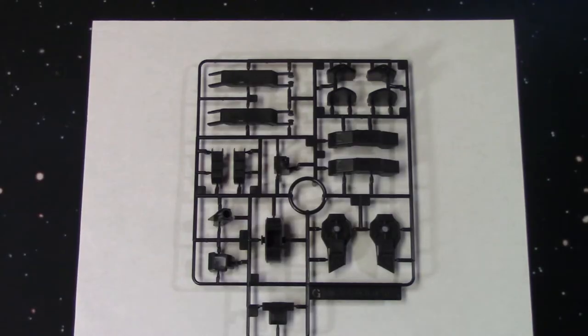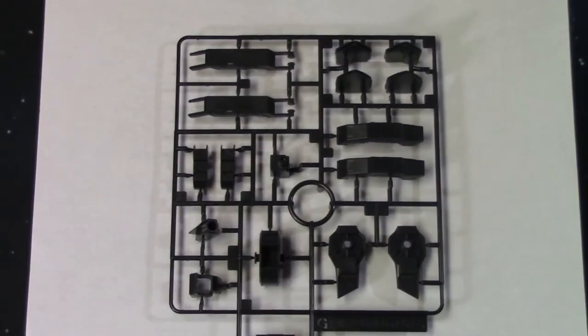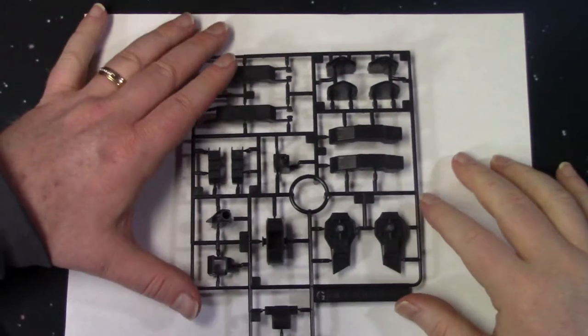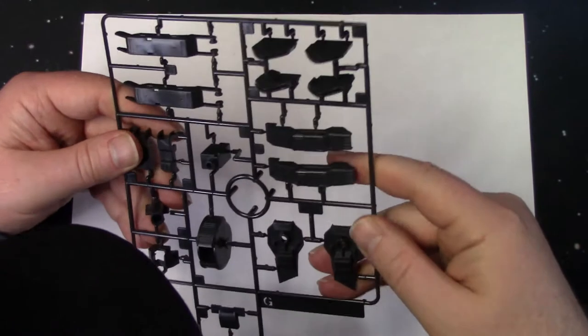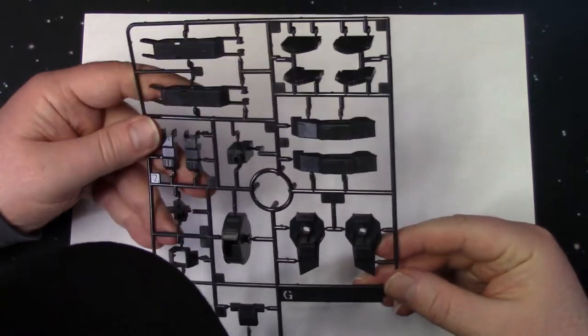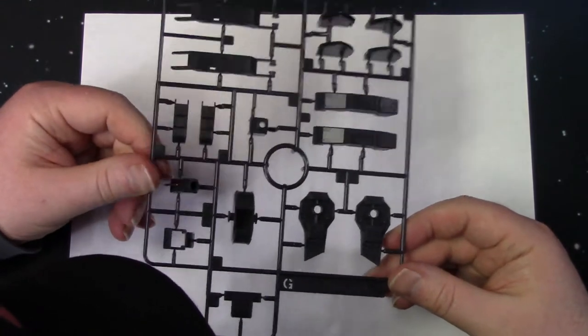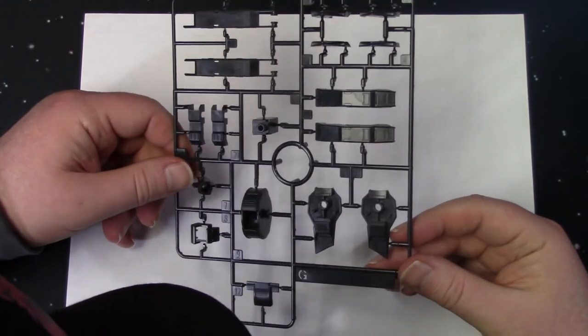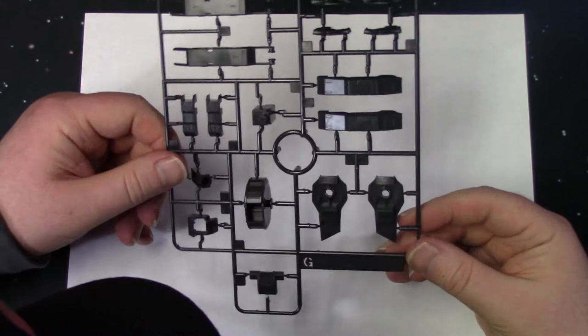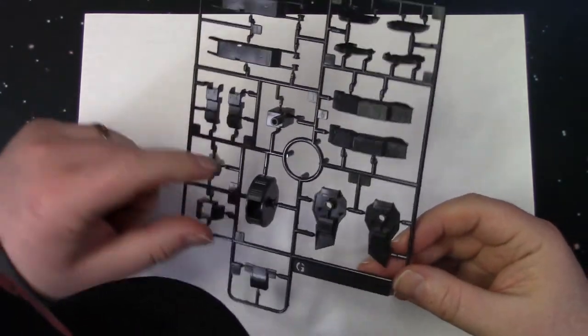Here's the G sprue. A little closer for you guys. Thin plastic. I just bent the sprue a little bit and it almost gave way. I'm not sure which parts are these, but. There you go. Might be the cockpit here.